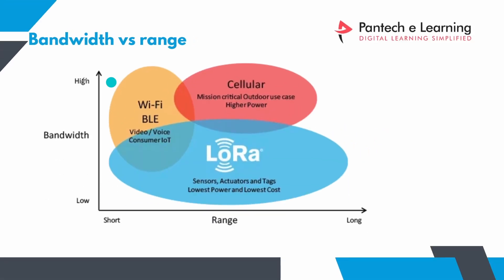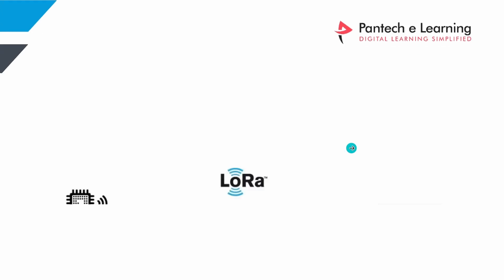Looking at bandwidth versus range: Wi-Fi and BLE have high bandwidth but short range. Cellular has high bandwidth and long range but has high power consumption. LoRa has a low data transfer rate but long range, making it suitable for many sensor-based IoT applications.